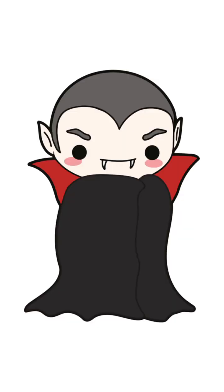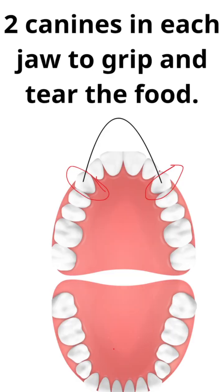Number 2 — do you know vampires? He is not real, of course, but he always has long canines, right? We also have 2 canines in each jaw to grip and tear the food.